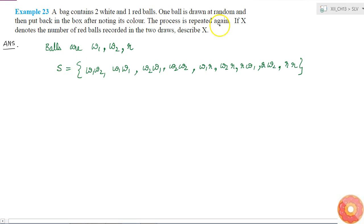Now what is said? X denotes the number of red balls recorded in the two draws. That is, if I consider any element p which belongs to sample space S, then X of this element p is equal to number of r in p, correct? We know that for any p which belongs to S, the domain of X is the sample space.